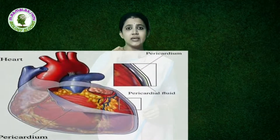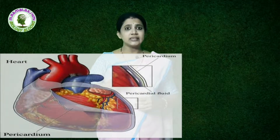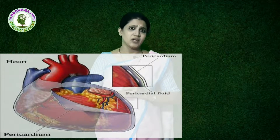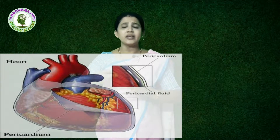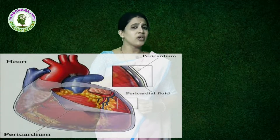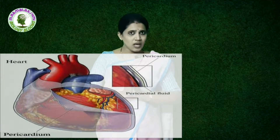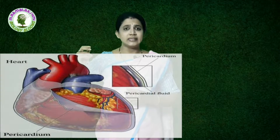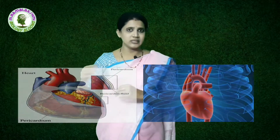How is the heart protected? It is protected by the rib cage. Also, the heart is covered by pericardial membranes — two pericardial membranes. In between the pericardial membranes, there is pericardial fluid. So with the help of pericardial fluid, pericardial membranes, and the rib cage, the heart is protected.